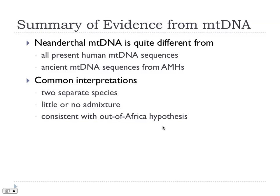So we have a consistent story. We've excluded the possibility of contamination, excluded the possibility of consistent DNA degradation, and we're getting a consistent picture that Neanderthal populations are separate. Neanderthal mitochondrial DNA is quite different from all present human mitochondrial DNA sequences and from ancient mitochondrial DNA in anatomically modern humans. This is consistent with two separate species — calling them Homo neanderthalensis is justified — with little or no admixture. It's consistent with the out-of-Africa hypothesis: that Europeans and other non-Africans originated in one exodus from Africa and replaced existing populations rather than mixing with them.